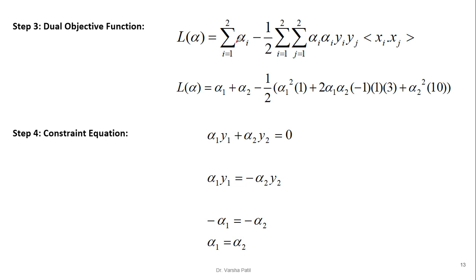Substituting into the dual objective: when i=1, j=1, we get alpha_1 squared times y_1*y_1 = 1 (same class). When i=1, j=2 and i=2, j=1, since classes differ, y_i*y_j = -1, giving a term of 2*alpha_1*alpha_2*(-1)*3. When i=2, j=2, the term is alpha_2 squared times 10. The full equation becomes: alpha_1 + alpha_2 - (1/2) * [alpha_1²*(1) + 2*alpha_1*alpha_2*(-1)*3 + alpha_2²*(10)].